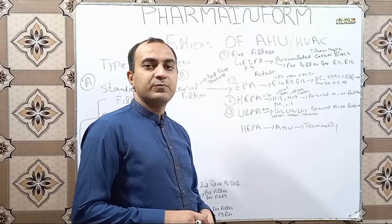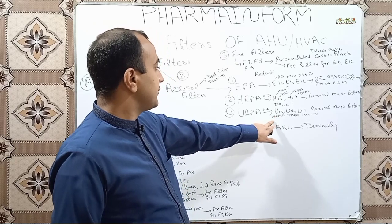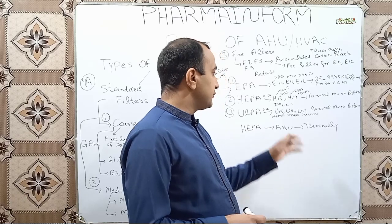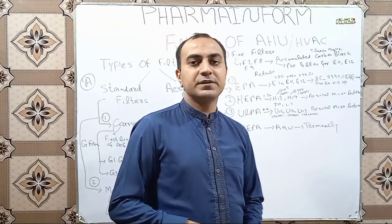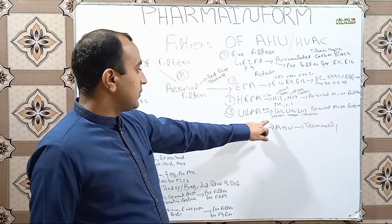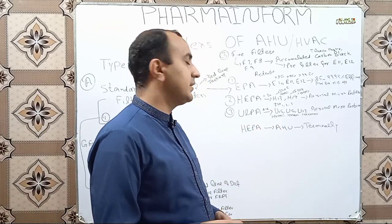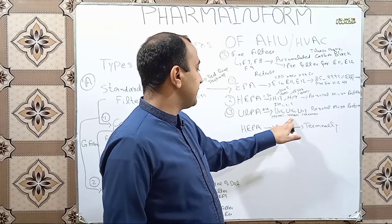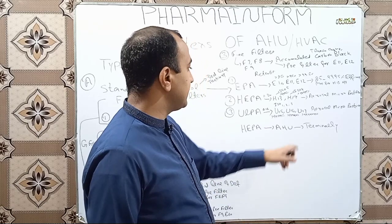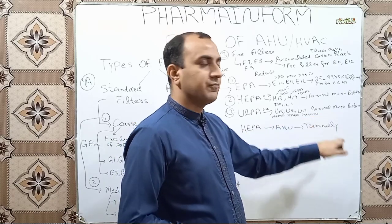ULPA or alpha filters have a pore size of 0.12 microns and are further classified into U15, U16, and U17. These are used for filtration of air containing micro particles or aerosol microparticles. U15 has a retention percentage of 99.9995 percent, U16 has 99.99995 percent, and U17 has retention greater than 99.99995 percent.